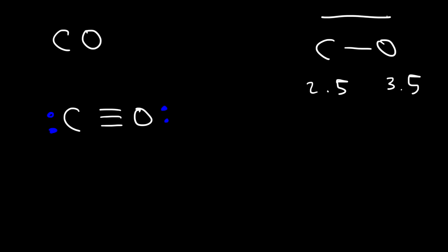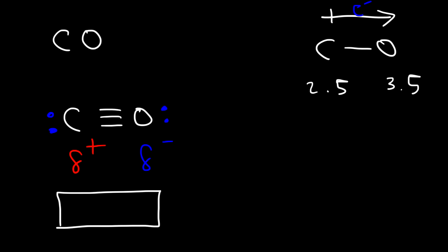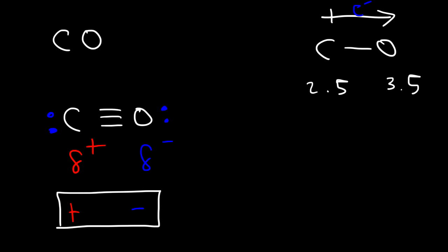As a result, oxygen pulls the electrons toward itself. So carbon bears a partial positive charge because it loses electron density to oxygen, and oxygen bears a partial negative charge. So we have an object where one side is positive and the other side is negative — this is a dipole. It's a polarized molecule.